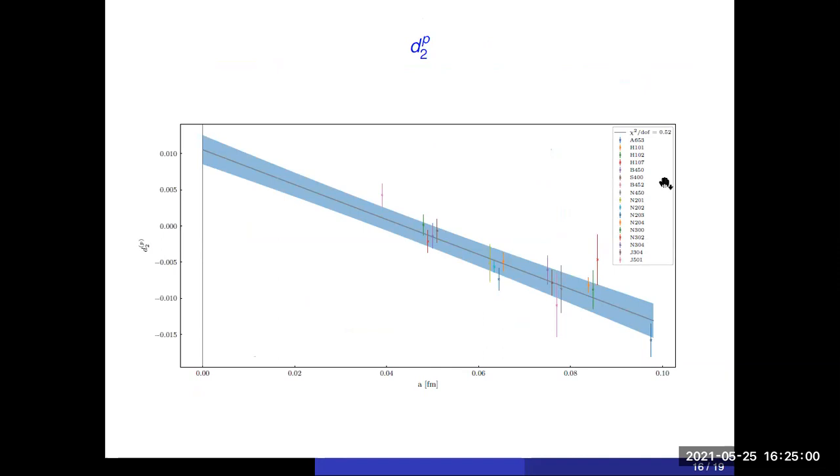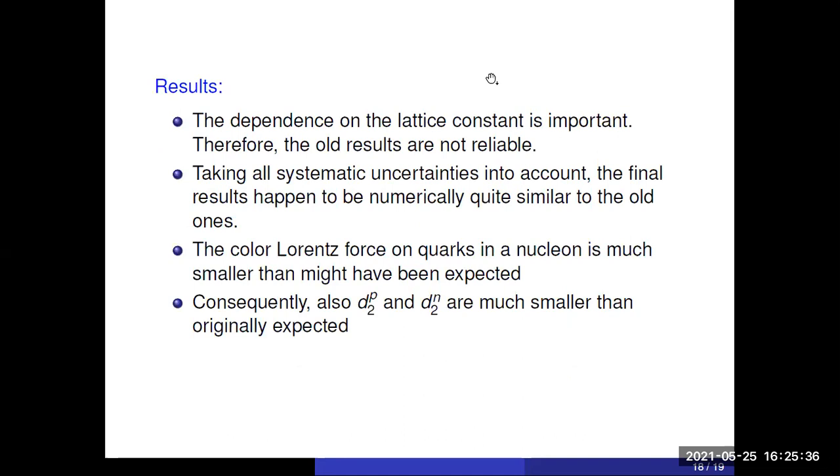Now we have done this much better lattice calculations using all these ensembles with all these different lattice spacings, which allows us to really do a controlled extrapolation to the continuum. In the old calculation, this was simply neglected, meaning it was assumed that this is flat. However, that was a very bad approximation because here it really even changes sign from minus 0.01 to plus 0.01. So it's really very important. And we have it for the proton and the neutron.